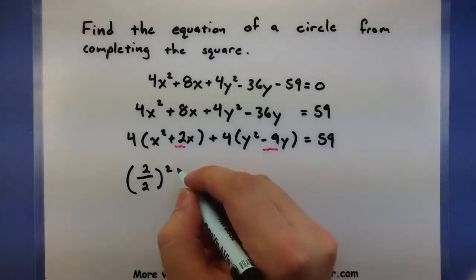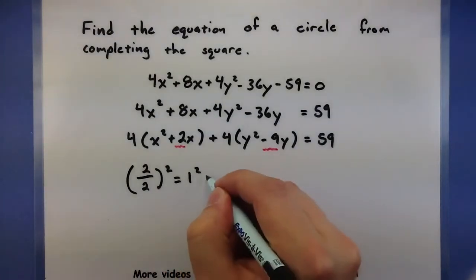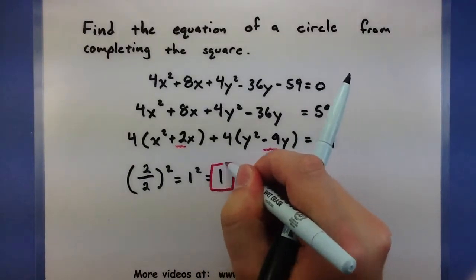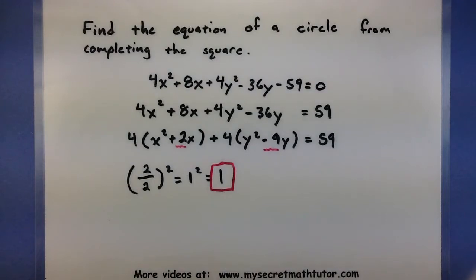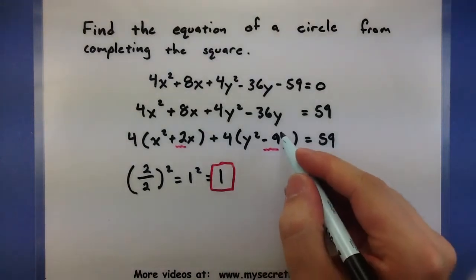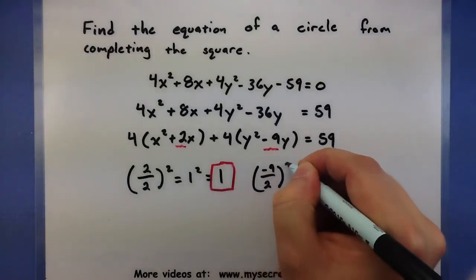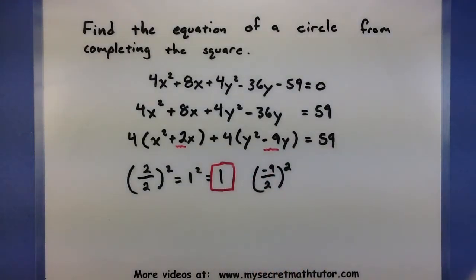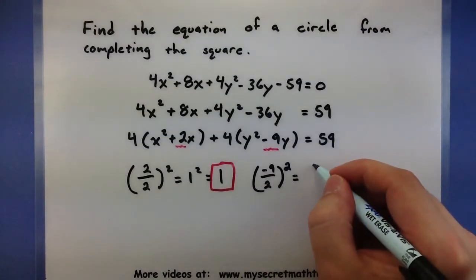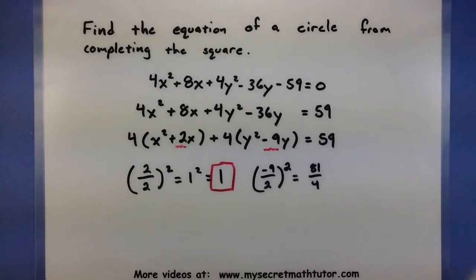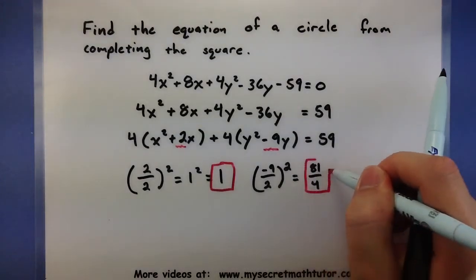On the inside, 2 divided by 2 is 1, and 1 squared is just 1. So this is one of the numbers I'll need to add to my x terms. Let's do the same thing for the y's — take a negative 9, divide that by 2, and square that. On top, 9 times 9 gives us 81 fourths. Sometimes they do tend to be fractions like this, but you just have to go with it. So here's the second number that we need.